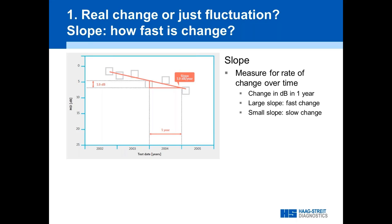We can measure rate of change over time using the slope. We start at the beginning of the year, go to the end, and see how much the mean defect dropped — for example, 1.9 dB. That means our slope, or rate of change, is 1.9 dB per year. This allows you to think about the aggressiveness of treatment in relation to the patient's age.